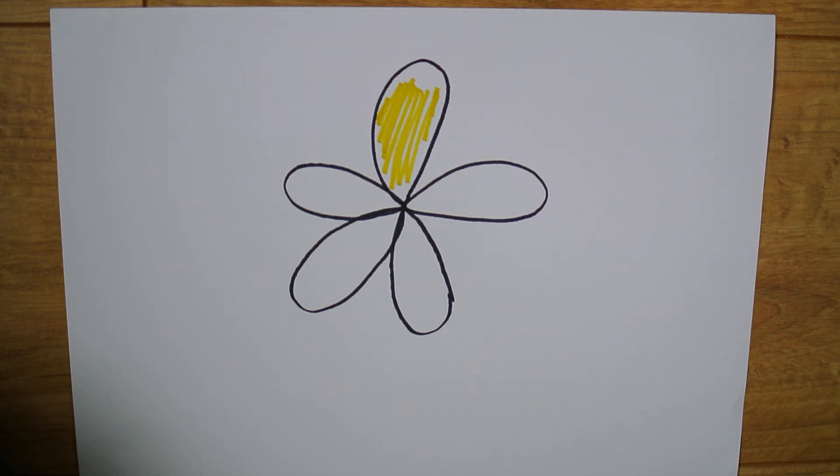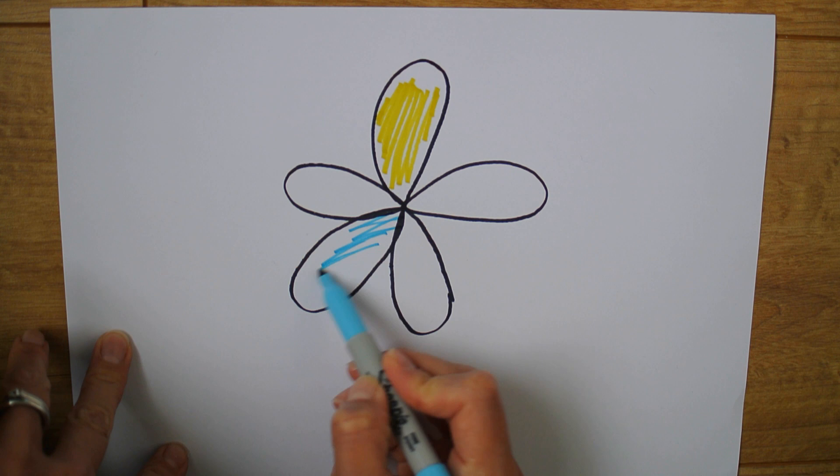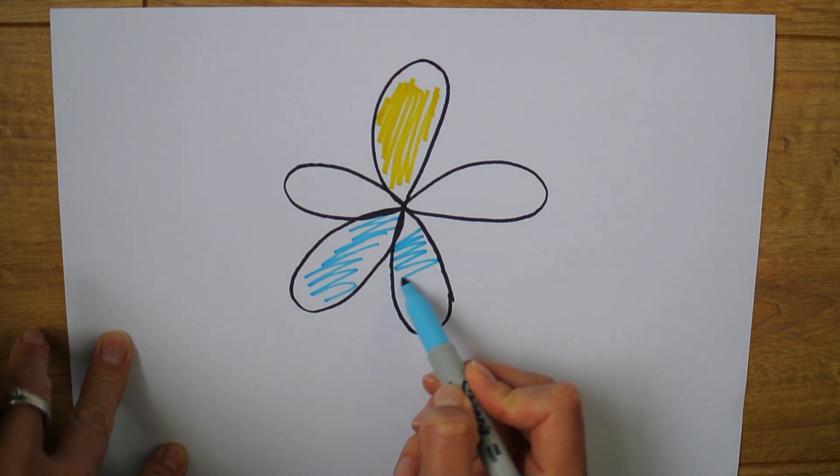So Amy shaded a single petal. My turn now. I'm shading blue. I'm going to shade two petals next to each other. These two.